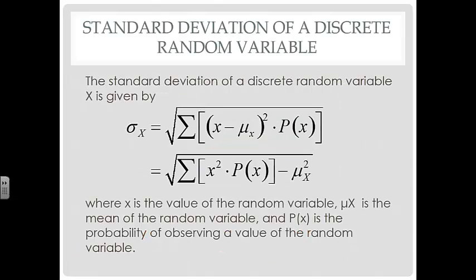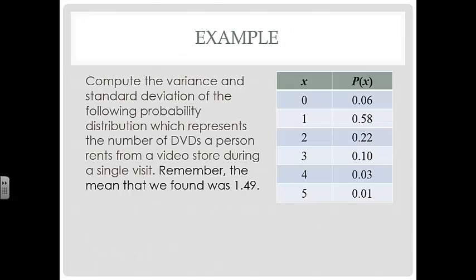The standard deviation of a discrete random variable is given by this formula. Notice that we're using sigma, so it's a population standard deviation. It's going to be the square root of the sum of all of the X minus the mean quantity squared times the probability of X. The sum of all of those. Now, keep in mind that X is the value of the random variable. Mu sub X is the mean of the random variable. And P of X is the probability of observing a value of that random variable. We'll talk about how to use this formula, but then we'll also look at how to do it on the calculator in class.